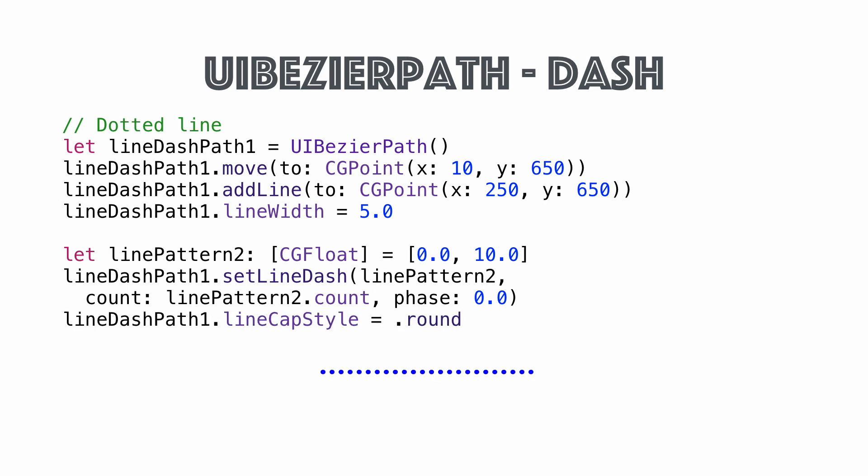Maybe you want to do a dotted line. By default, when you draw a Bézier path, the ends have a line cap style called 'butt' — it just ends straight. Setting the line cap style to 'round' will make the end of the path be a half circle.